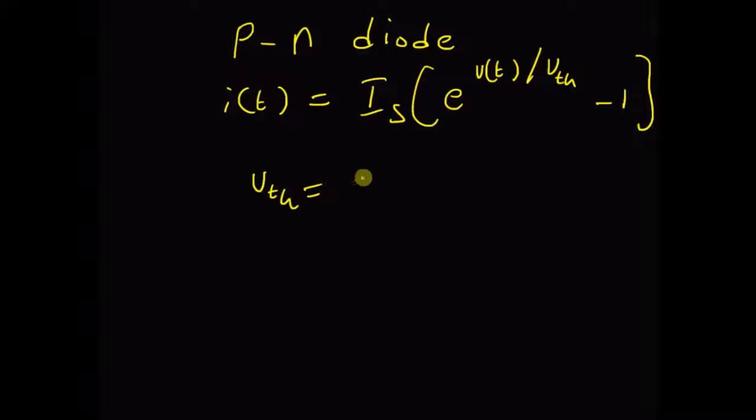The constant Vth is given by the product KT by Q.